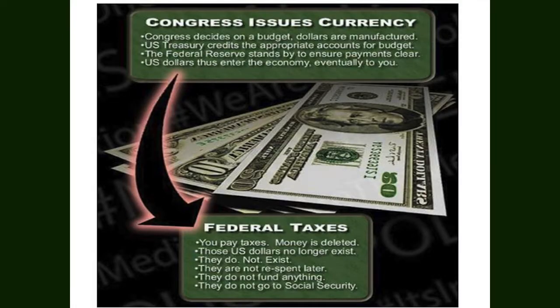A quick summary: Congress issues the currency, often electronic. Congress decides on a budget. Dollars are manufactured. The U.S. Treasury credits the appropriate accounts for the budget. The Federal Reserve stands by to ensure payments clear. U.S. dollars thus enter the economy and eventually come to you. Federal taxes: you pay taxes, the money is deleted. These dollars no longer exist. They are not re-spent later. They do not fund anything. They do not even go to Social Security.